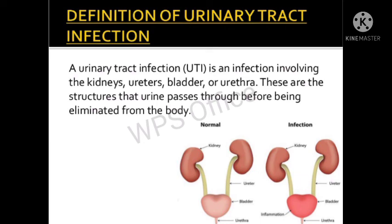These are the structures that urine passes through before being eliminated from the body. As you can see in the image, it shows a normal urinary system, and in the infected one you can see inflammation of the bladder, the urethra, and the kidney.